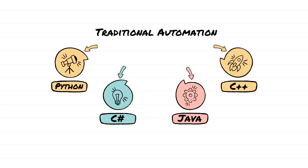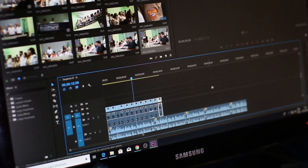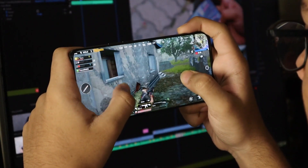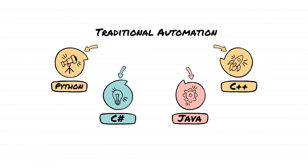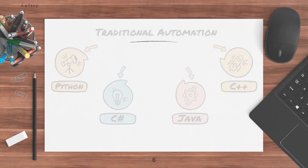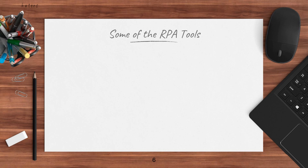Without deep programming knowledge, we can automate using an RPA tool through a GUI — Graphical User Interface. When we look at the screen, we interact through the GUI, while the programming runs in the background. Using RPA tools, we can work without needing to write code directly.